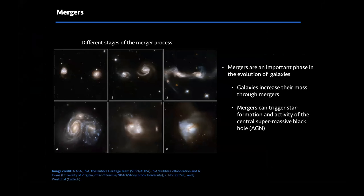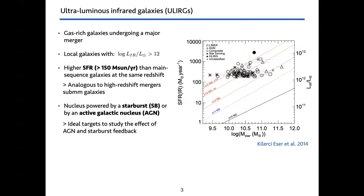The previous speaker has already done a good introduction on why merger processes are important. They are an important stage in the evolution of galaxies and are one of the mechanisms through which galaxies can increase their stellar mass, and also through the merger process can trigger an episode of starburst in the center of the galaxy and also the activity of the central supermassive black hole. In this work I will focus on one particular class of mergers which are ultra luminous infrared galaxies, or ULIRGs.